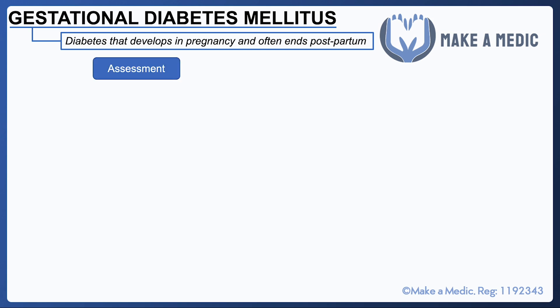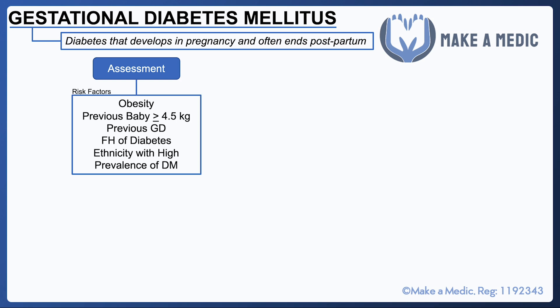With regards to assessing a patient for the probability of them having GDM, it's important to consider their risk factors. Many of these are the same as the risk factors for diabetes mellitus — so obesity, a family history of diabetes, and also being of an ethnic group that is known to have a high prevalence of diabetes, all of which would contribute towards an increased risk of GDM.